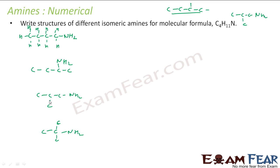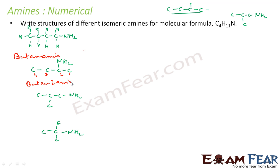Let me name these. The first is a straight chain with the amine: butan-1-amine. For the second compound, numbering one through four, the NH2 is at position two, so it is butan-2-amine. For the third, I have a methyl group attached, and the longest chain is three carbons, so the name begins with propan- with a methyl substituent, giving 2-methylpropan-1-amine.